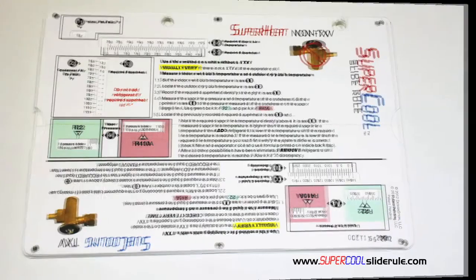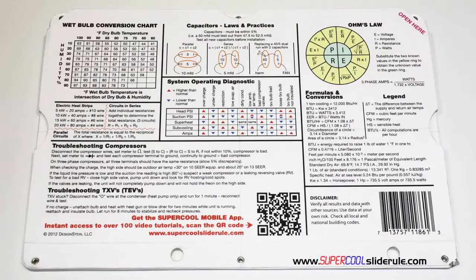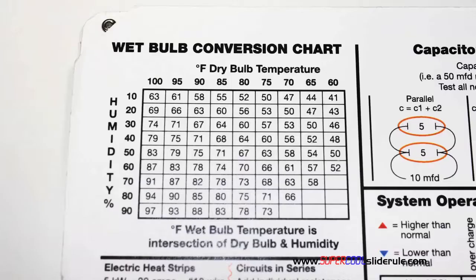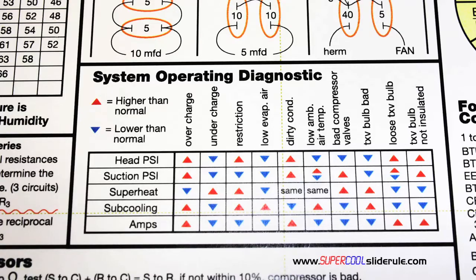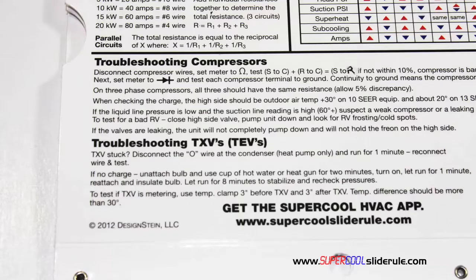The back cover contains required formulas. It has capacitor rules and practices, a wet bulb conversion chart, how to perform computations on series or parallel circuits, an electric heat strip guide, a complete system troubleshooting diagnostic chart, and how to troubleshoot compressors and TXV.